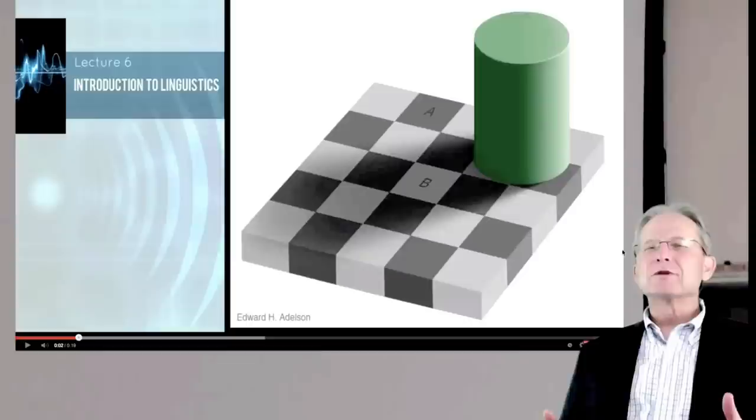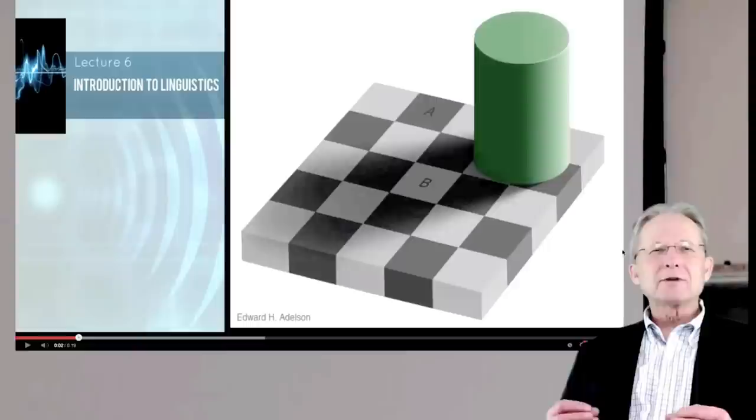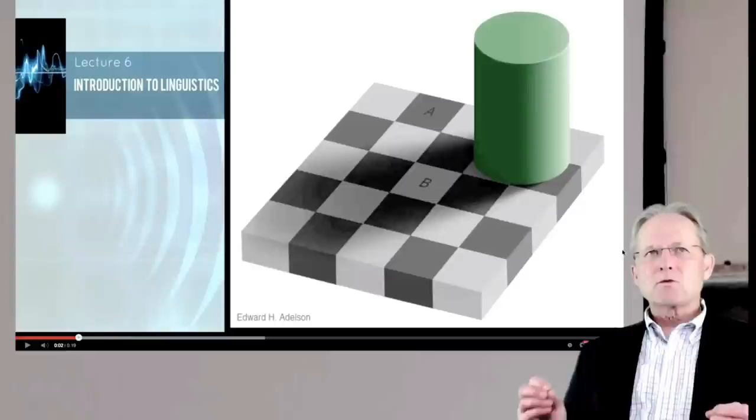And because it's an optical illusion, obviously you're going to say yes, they have the same color. They are the same color. But nevertheless, we experience square A and square B as being different colors.